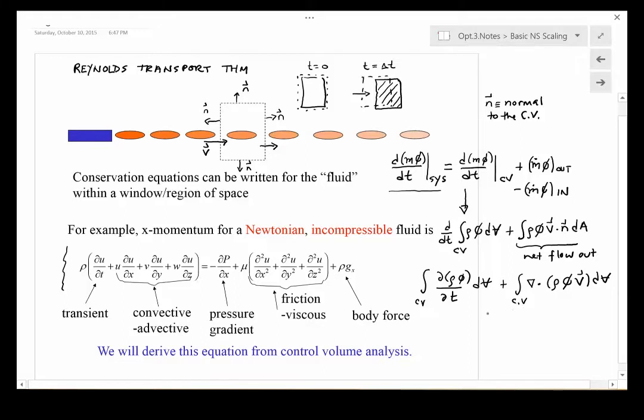This is also over the control volume. We pull both of these together because these are both for the control volume. We have an integral over the control volume of d(rho phi)/dt plus the divergence of rho phi v dv, where the dv is over the volume—this v is the volume, the differential volume.